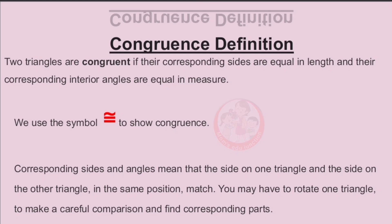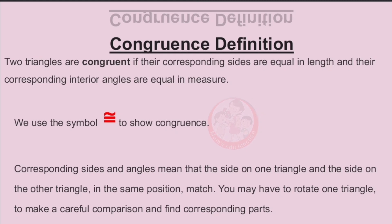Before starting the congruence rules, we need to know the definition of congruent. If the corresponding sides of two triangles are equal in length and their corresponding interior angles are equal in measure, then we say the two triangles are congruent. Corresponding sides and angles means the side on one triangle and the side on the other triangle in the same position match. You may have to rotate one triangle to make a careful comparison.